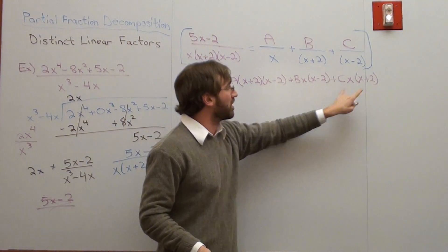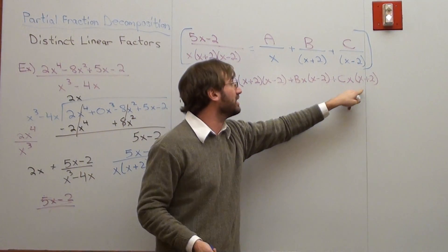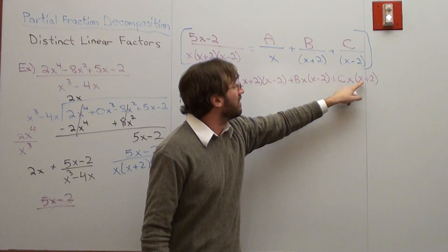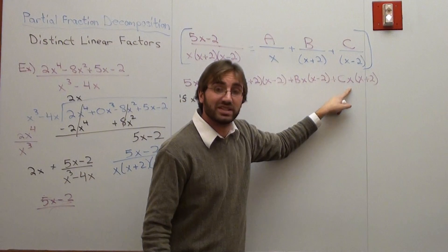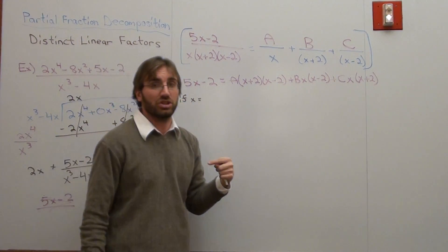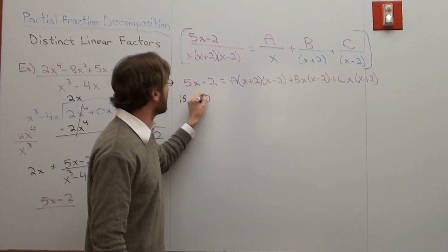For instance, if I pick negative 2, if this becomes 0, then everything with the C becomes 0, too. So that would be really cool. Now, the value I'm going to actually use is I'm going to use 0, if x equals 0.